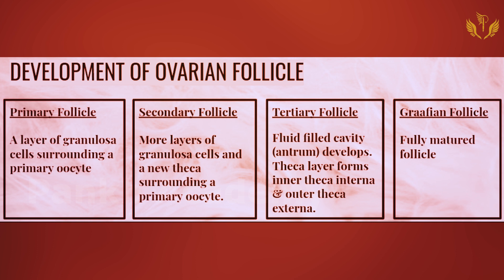The tertiary follicle has a fluid-filled cavity called the antrum, with internal and external layers present. The Graafian follicle is the fully matured follicle. So the four stages are: primary, secondary, tertiary, and Graafian follicle. This completes the development of the ovarian follicle — remember all these steps.